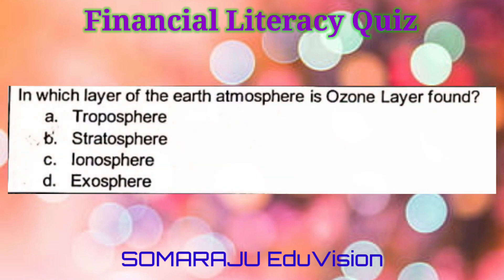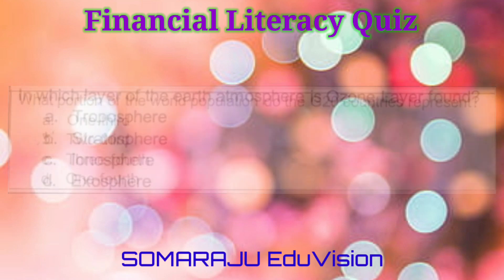Question number twenty: In which layer of the earth's atmosphere is the ozone layer found? A. Troposphere, B. Stratosphere, C. Ionosphere, D. Exosphere. The correct answer is B. Stratosphere.